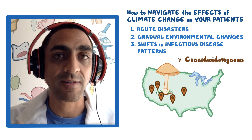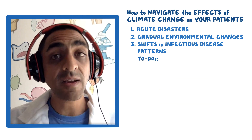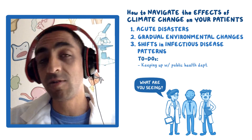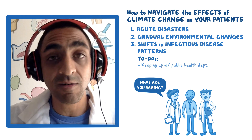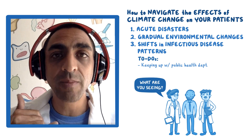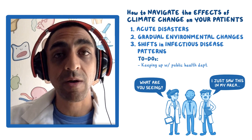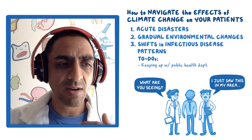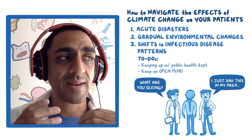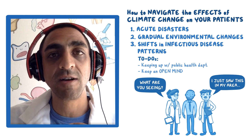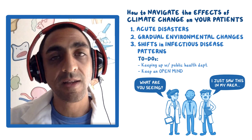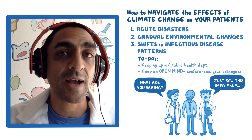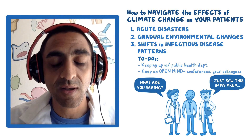Getting more familiar with changing patterns in your area is key. The to-do here is keeping up with your public health department and asking what they're seeing and what you should be aware of. And the reverse — if you see something out of the ordinary and diagnose it, make a phone call and let your public health department know so others can be aware of your experience. Keep an open mind and don't assume that your differential from 10 or 20 years ago is still correct today.